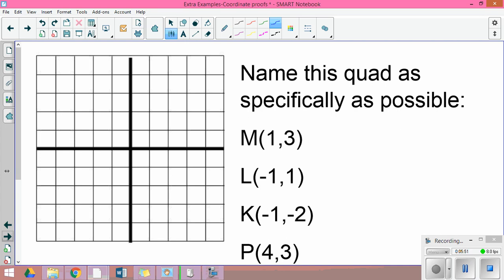Let's look at another example. Here's this figure: M at (1,3), L at (-1,1), K at (-1,-2), and P is at (4,3). Looking at the picture, I suspect it's some sort of a trapezoid, but I must provide proof of that.